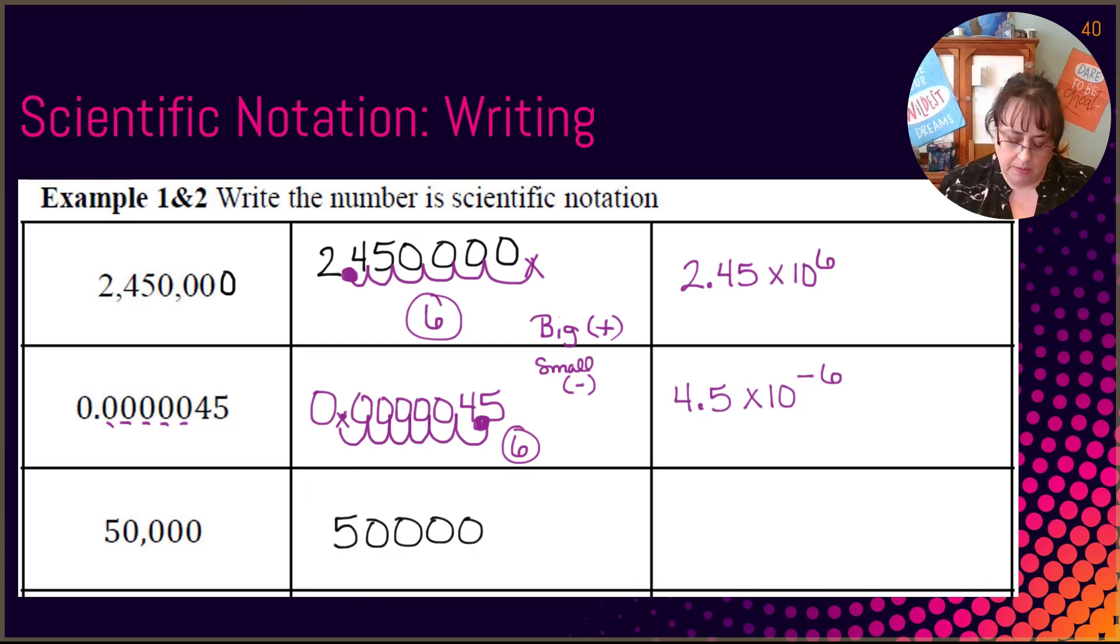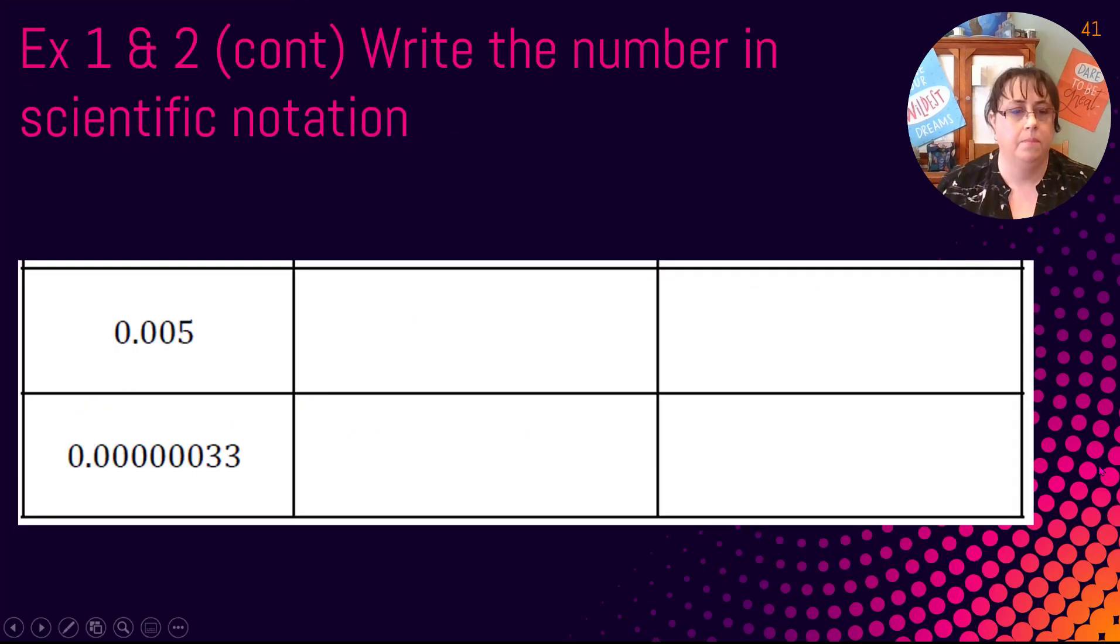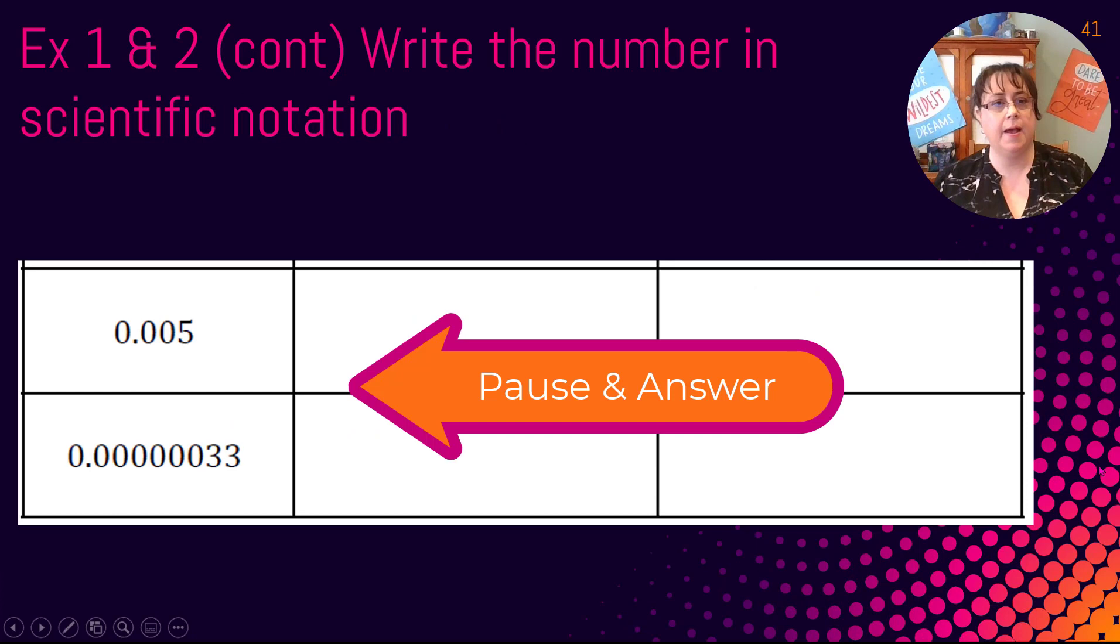You guys try this next one. All right. Where did you put that decimal? It should have gone right here. And it started here. So that's 1, 2, 3, 4. This is a big number. So it's going to be positive. So you should have done 5.0. We just need one of those zeros. Times 10 to the - is it positive 4 or negative 4? It's a big number. So it's positive 4.